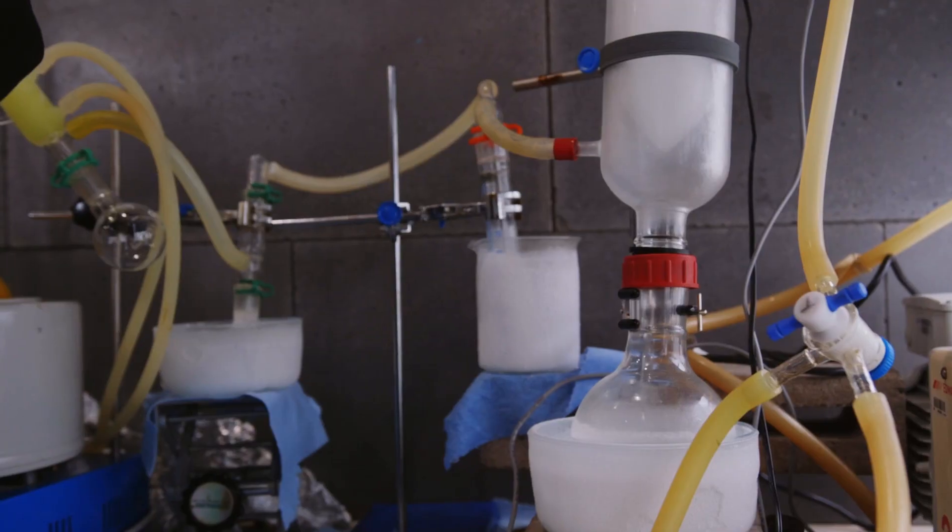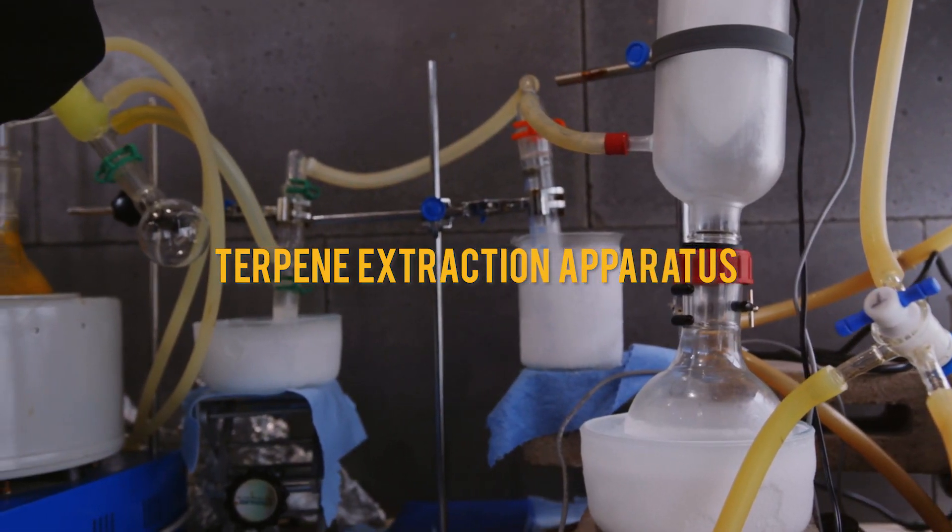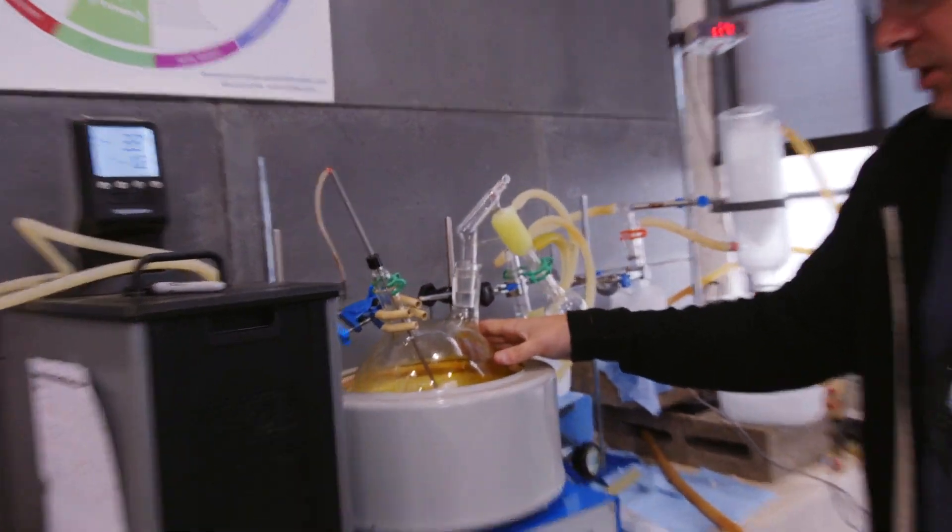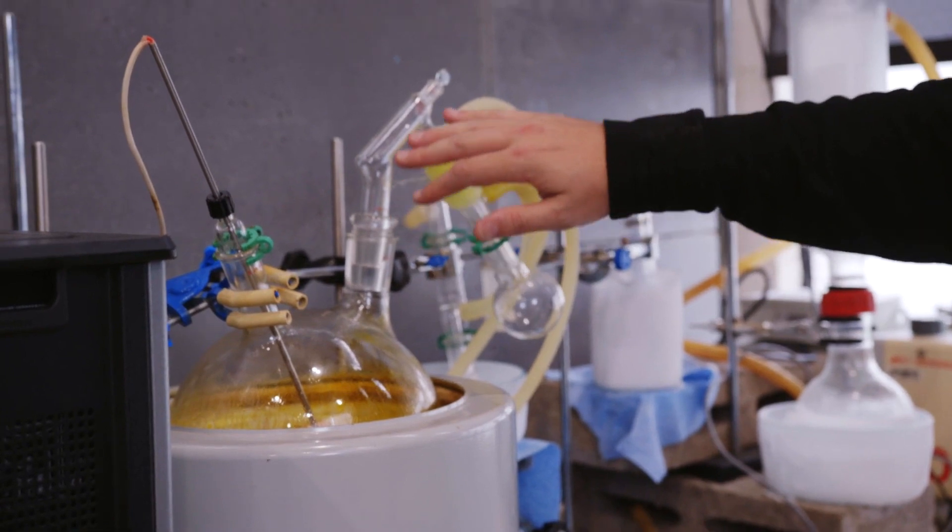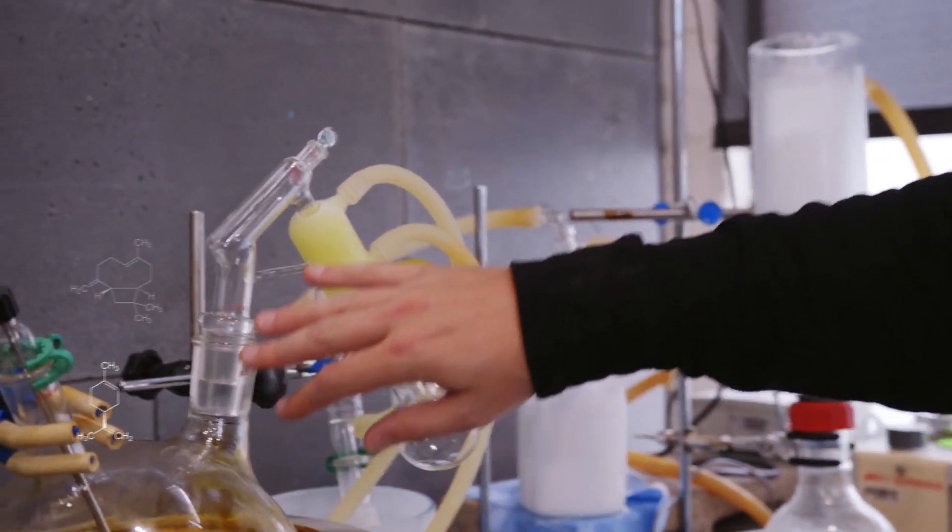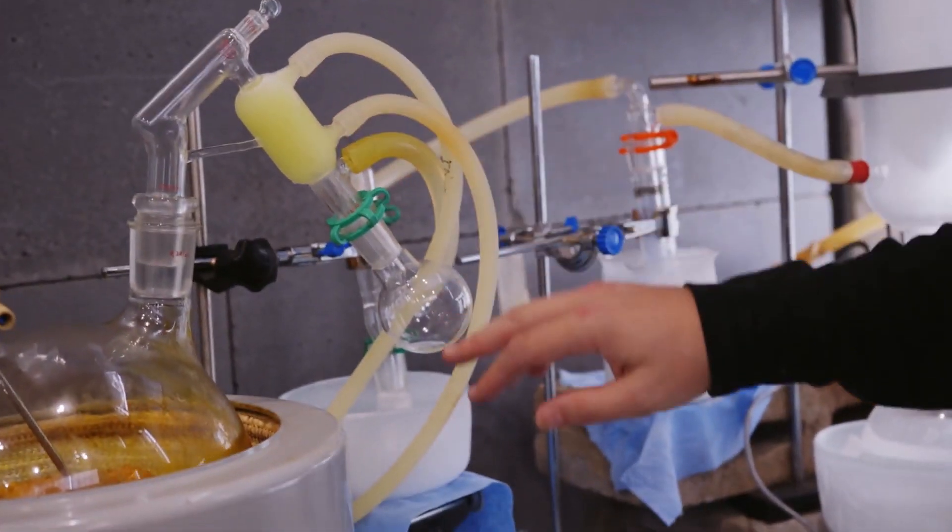So what I've got here is our terpene extraction apparatus. We've got material that we loaded from the cryo room that's being melted, and as it melts under vacuum, the vapors of the terpenes and other molecules are going to rise up here, cool down, and get trapped here.